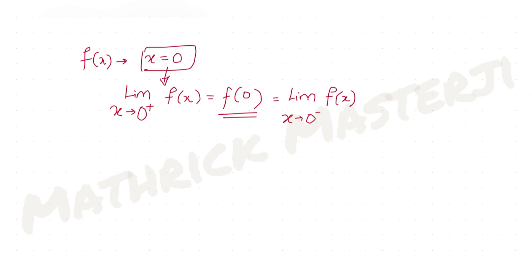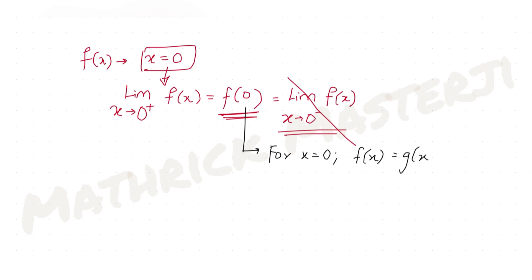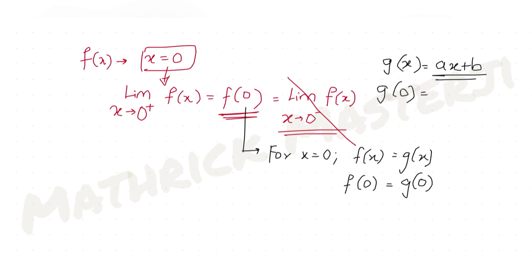For x less than 0 and x = 0 the function is the same, so we focus on that. To find f(0): since f(x) = g(x) at x = 0, we get f(0) = g(0) = a(0) + b = b. So f(0) = b.